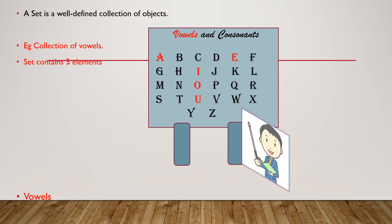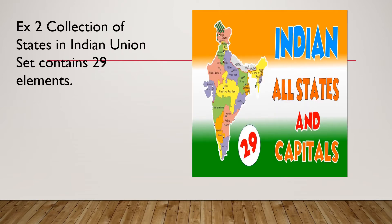For example, the first is the collection of vowels — then the set will contain 5 elements. The next example is the collection of states in an Indian Union territory, and again we will have 29 elements. So this is also a well-defined collection of states, and again, a set.